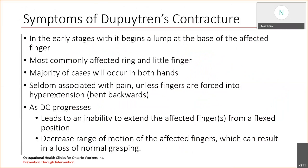In terms of the symptoms, in the earliest stages it begins with a lump at the base of the affected finger, and it most commonly affects the ring and little finger. The majority of cases will occur in both hands, and it is seldom associated with pain